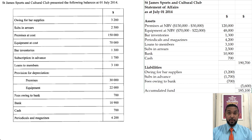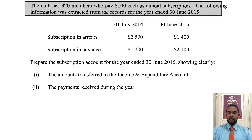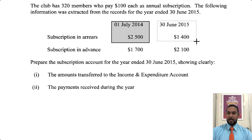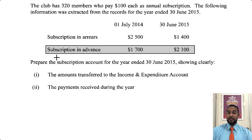So let me rearrange and look at the next part of the question. The club had 320 members who each pay $100 as an annual subscription. So 320 times 100 is $32,000 — that's the subscription you're supposed to receive every year. The following information was extracted from the records for the year ended 30th June 2015. We have subscriptions in arrears with an opening balance and a closing balance, meaning some people owe their subscriptions at the start and end of the year.